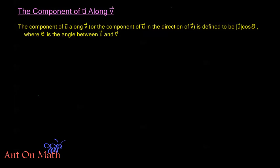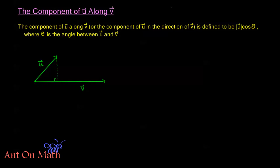Let me draw a couple pictures here so we can see what's going on. I have two vectors sharing an initial point — this is my u and this is my v. If I draw a line from the terminal point of u to v such that there is a 90-degree angle, we say that this distance here is the component of u along v.